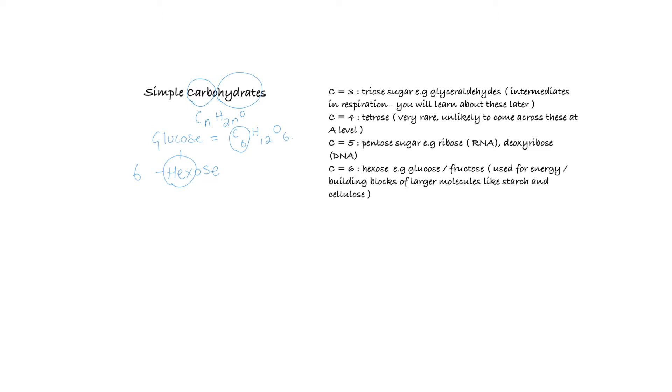For instance, we have pentose sugars ribose and deoxyribose in RNA and DNA respectively. And then the hexose sugars, which are the most common, like glucose and fructose. These are used for energy and building blocks for other molecules.